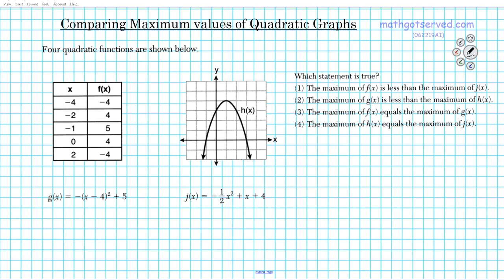Let's start with the first one, f of x. So f of x is a quadratic function presented in tabular format. So what we can do is if we inspect the pattern of the output values, we can easily determine what the maximum value is. So if you take a look at this table right here, you notice you have negative 4, 4, 5, 4, negative 4.